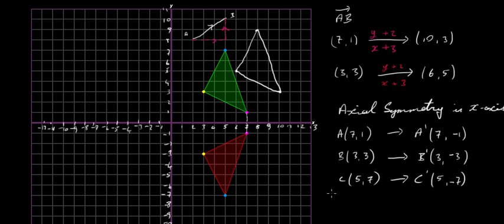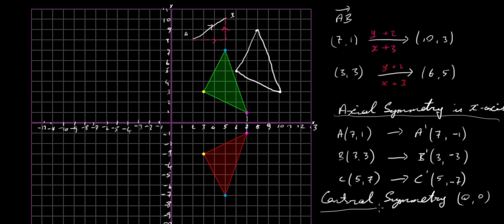The next transformation is central symmetry. We're going to do central symmetry in the origin at (0, 0). To do this, you take each point, go towards the origin, measure that distance, and continue on the same direction the same distance on the other side. If there isn't a grid, you'd need to use a ruler.